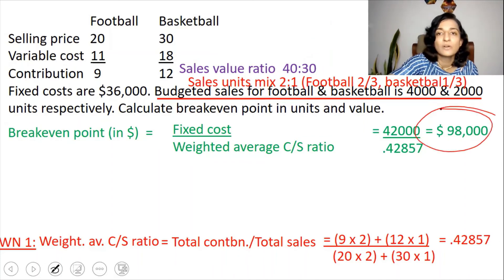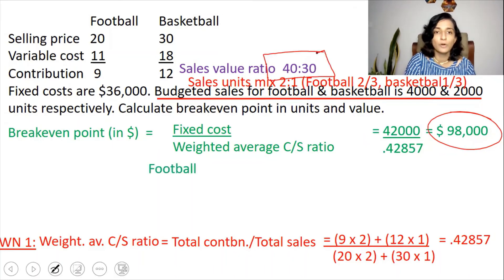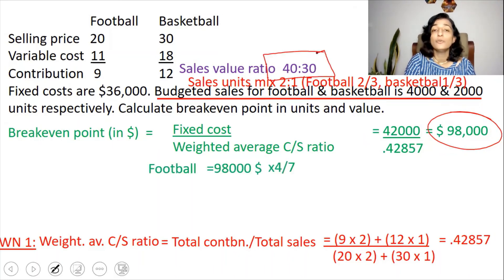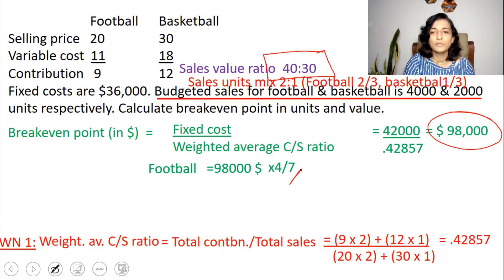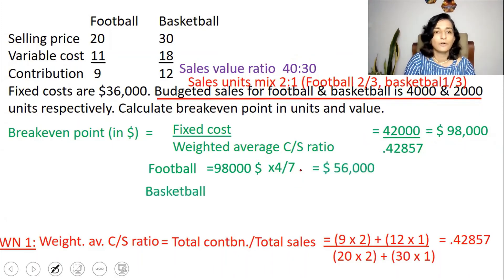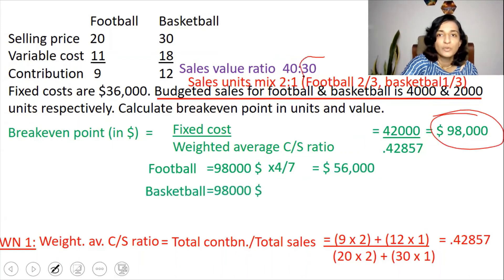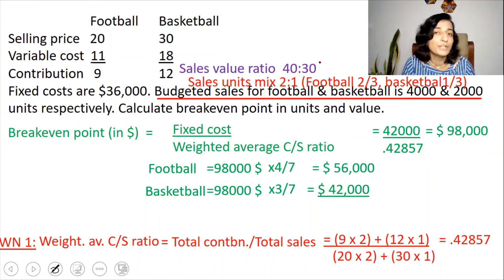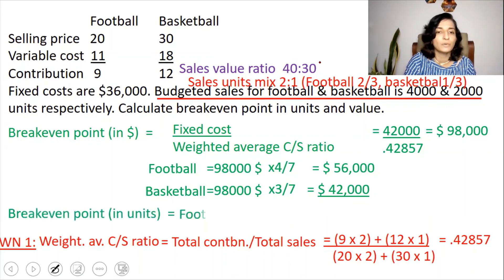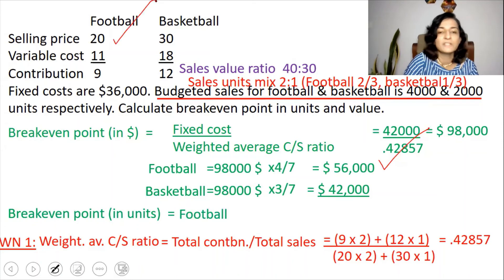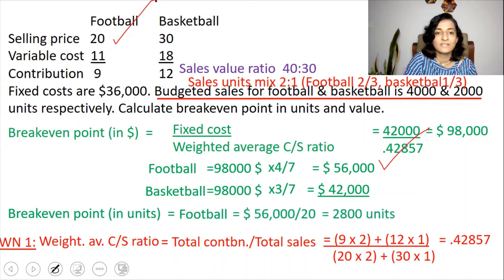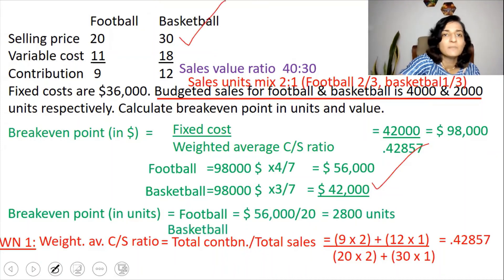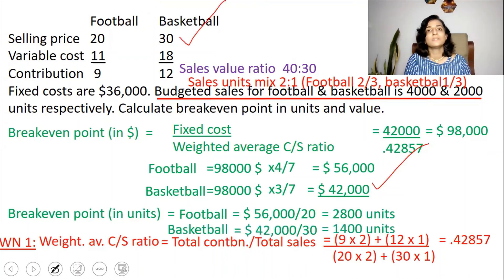Dividing $98,000 in the ratio 4:3 (total 7 parts): football = $98,000 × (4/7) = $56,000; basketball = $98,000 × (3/7) = $42,000. To find break-even in units from these dollar figures, divide by the selling price: football = $56,000 ÷ $20 = 2,800 units; basketball = $42,000 ÷ $30 = 1,400 units.